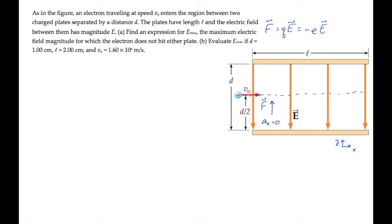As the electric field and the force is increased, the electron is deflected farther and farther from a straight line path. When the electric field takes its largest allowable value, the electron will have traveled horizontally a distance l, and vertically a distance d over 2.